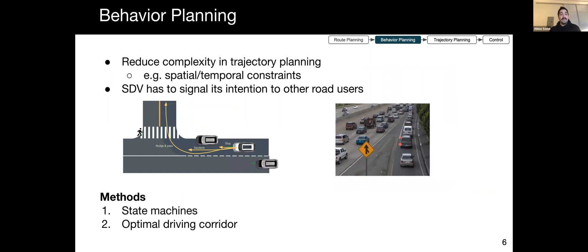After the route is planned, the rest of the motion planning pipeline makes sure that the SDV progresses on the route, taking into account the static and dynamic driving context. For this, the planner first decides on a high-level behavior that describes the set of desired trajectories. This narrows down the search for the optimal trajectory in the subsequent step, for example, by imposing spatiotemporal constraints on the position of the SDV or adjusting the objective function.